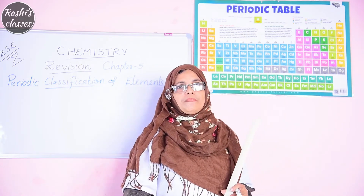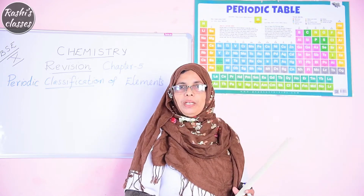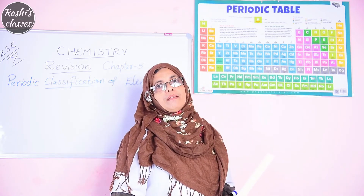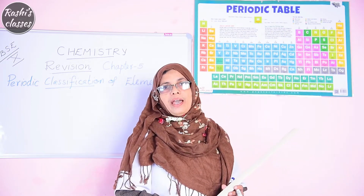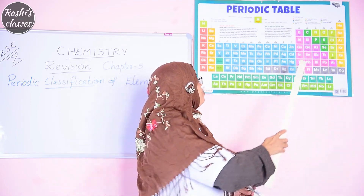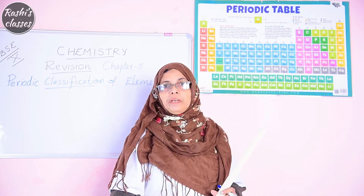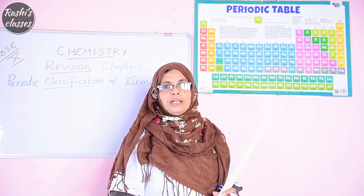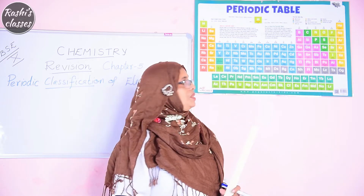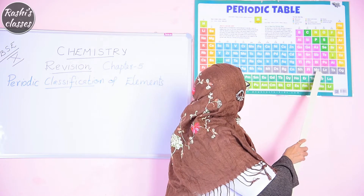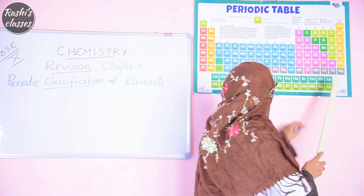Transition elements are also called d-block elements. The boron family members are boron, aluminium, gallium, indium, and thallium. The carbon family members are carbon, silicon, germanium, tin, and lead.